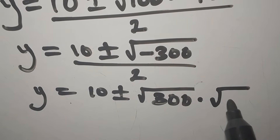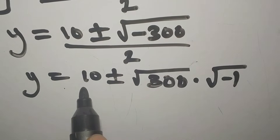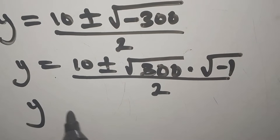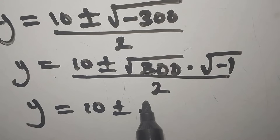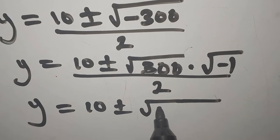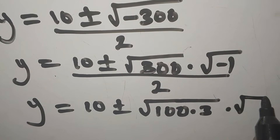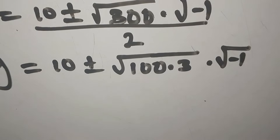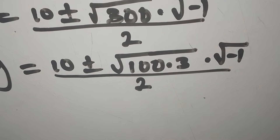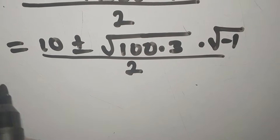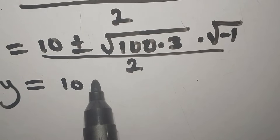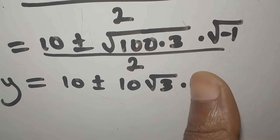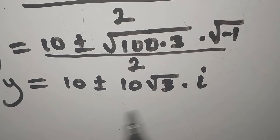The square root of negative 1 is i. We can also break down root 300 as root of 100 times 3, and dividing everything by 2. The square root of 100 is 10, so we have 10 root 3 times i, divided by 2. That simplifies to y equals 10 plus or minus 10i root 3, all over 2.